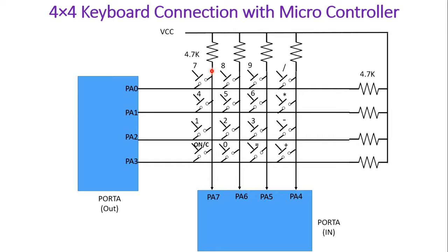At the intersection of every row and column we have connected one switch. On the first row and first column we have connected key 7; on the second column and first row we have connected key 8. Likewise: 9, division, 4, 5, 6, multiplication, 1, 2, 3, minus, 0, equal to, plus. This is similar to a calculator layout. Our main purpose is to identify the equivalent code of the pressed key and display it on the LCD.